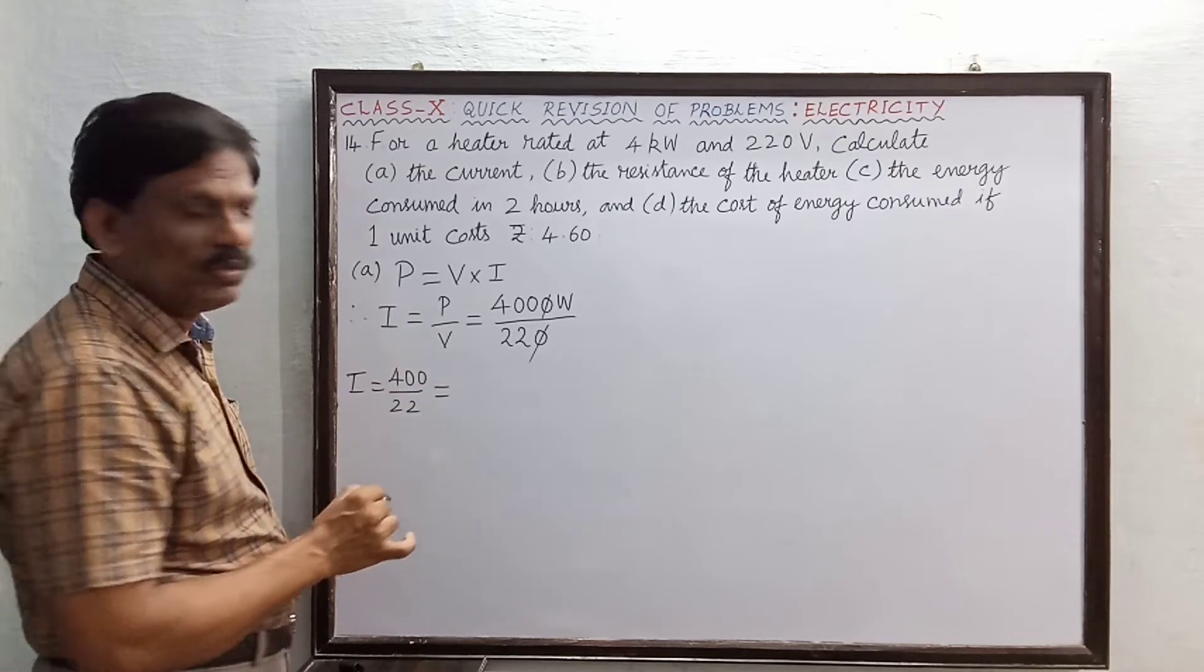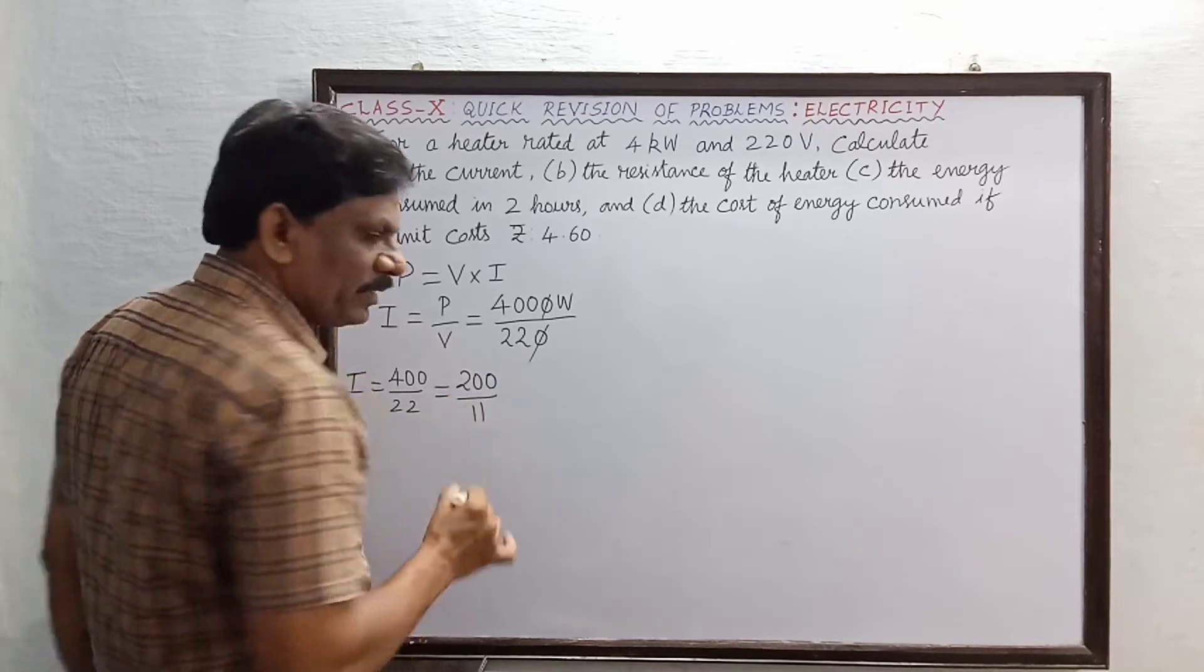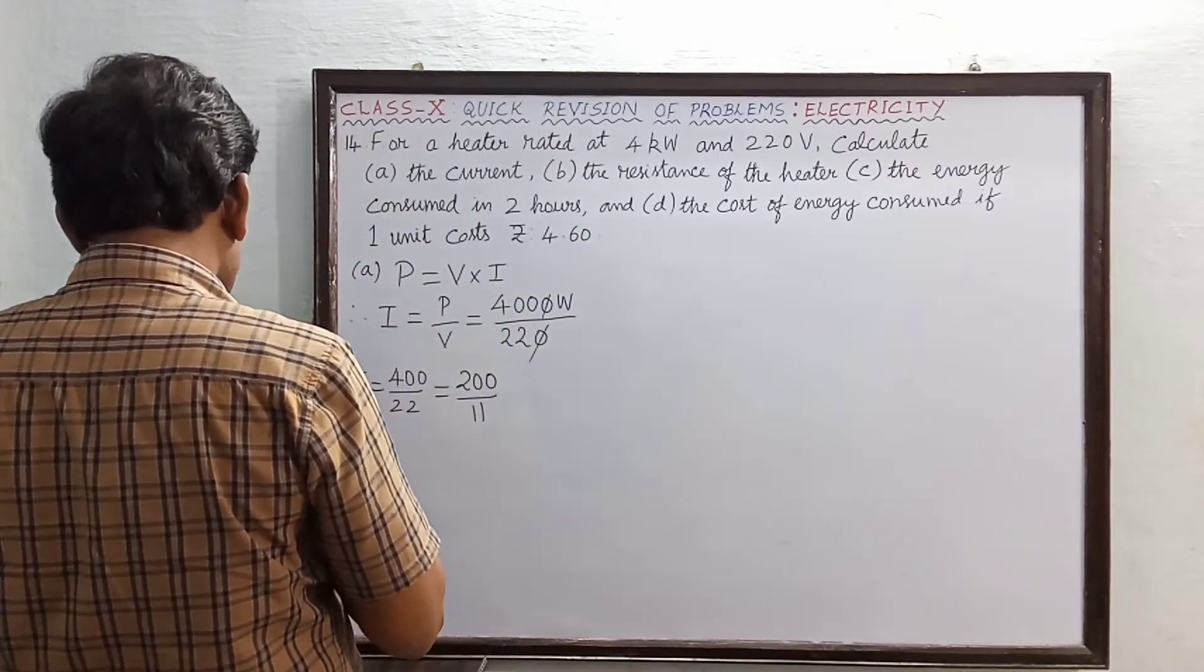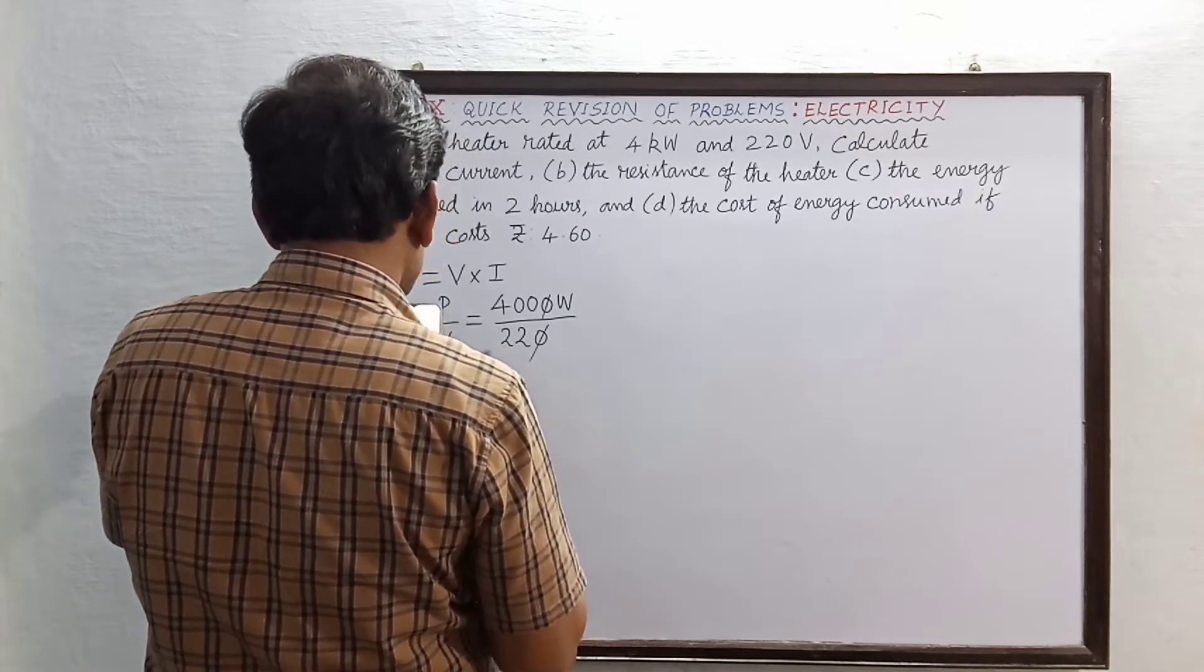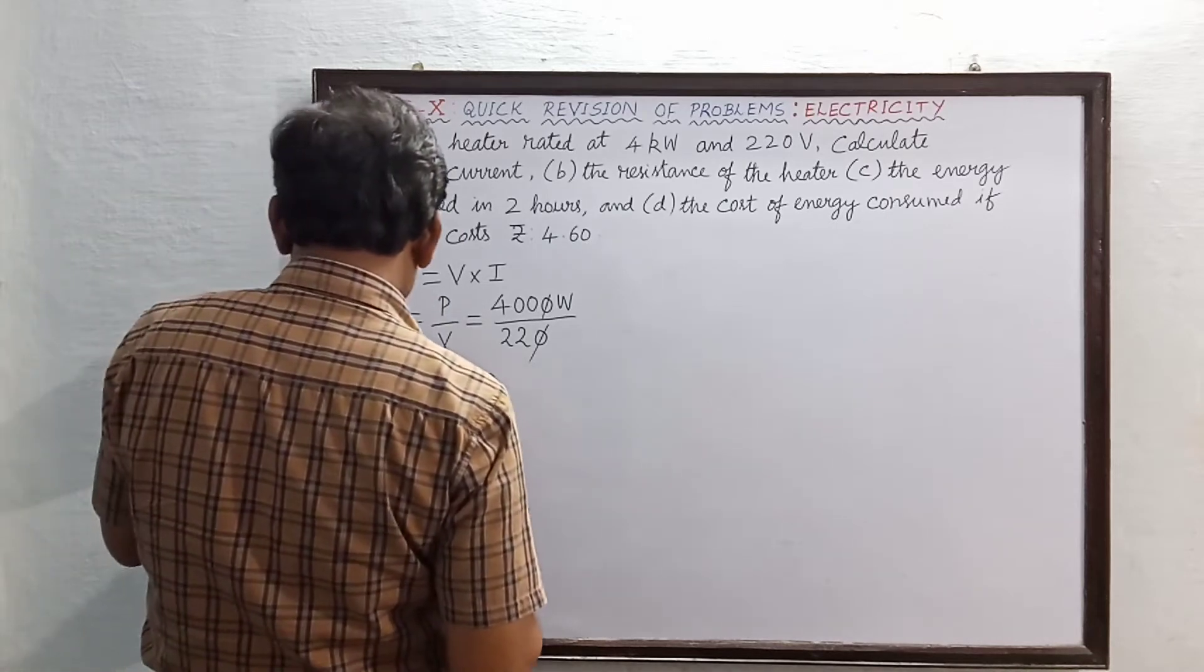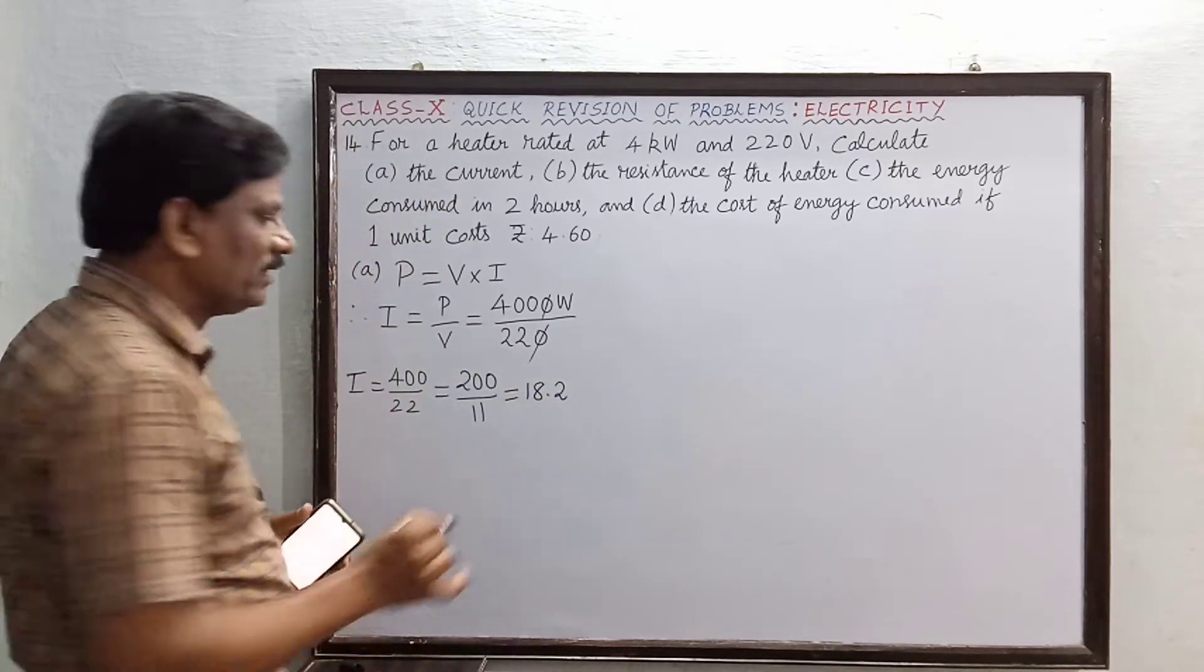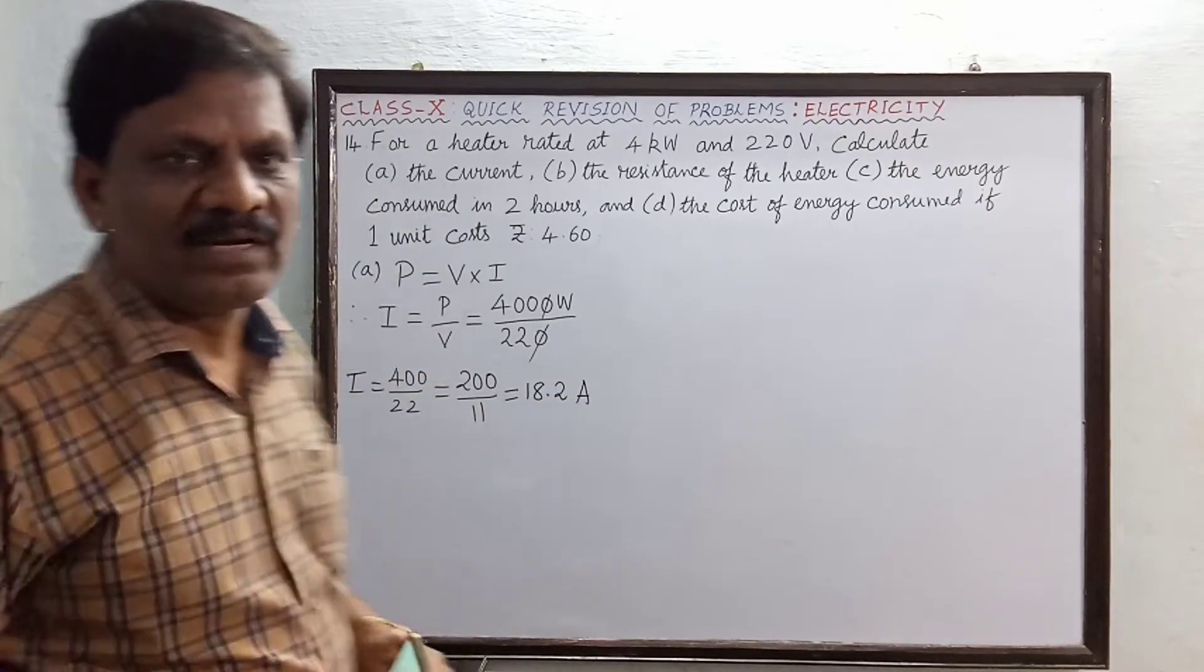This is again divisible by 2, so this is 200 divided by 11. We can use the calculator. This is equal to 18.18. We can round this up to 18.2 ampere. The first subdivision now we have determined the current.